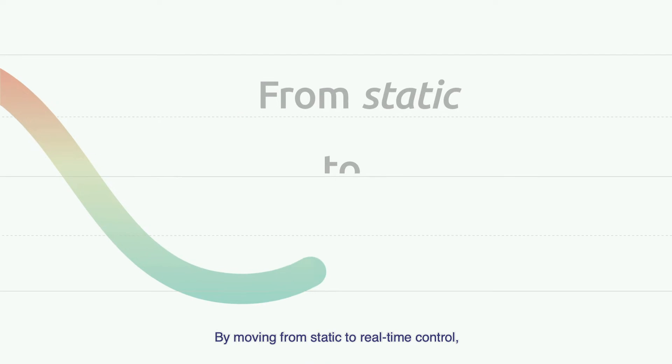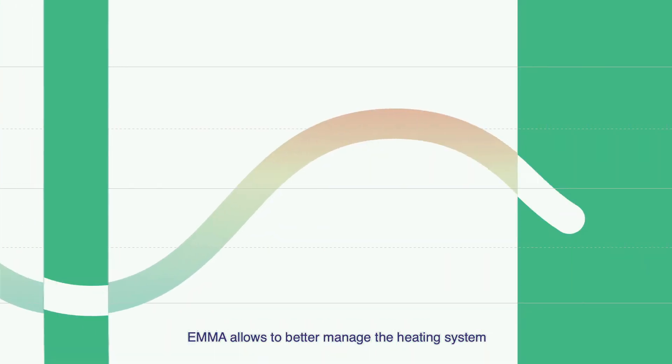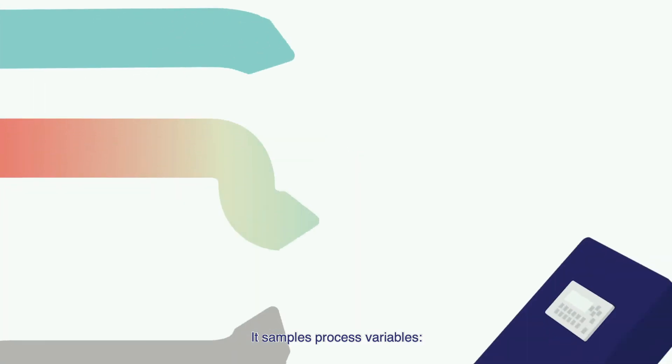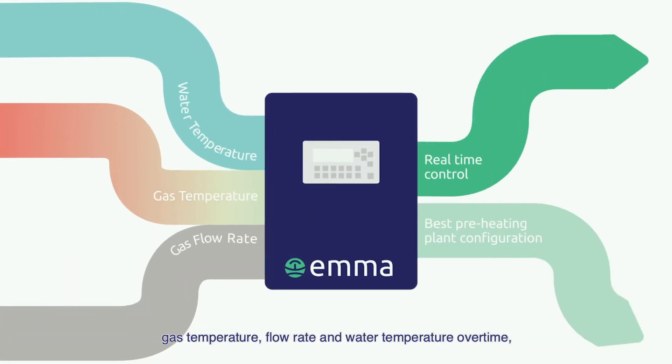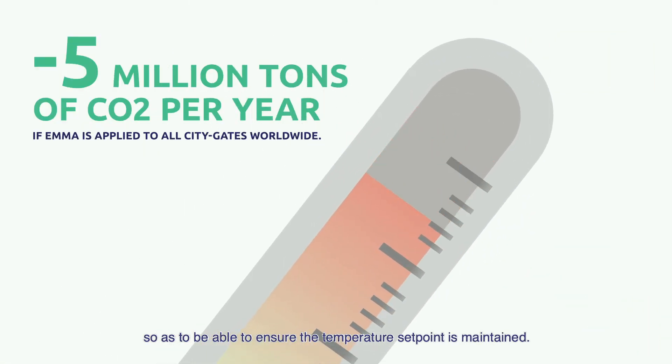By moving from static to real-time control, AIMA allows to better manage the heating system in the gas processing plant. It samples process variables, gas temperature, flow rate and water temperature over time so as to be able to ensure the temperature set point is maintained.